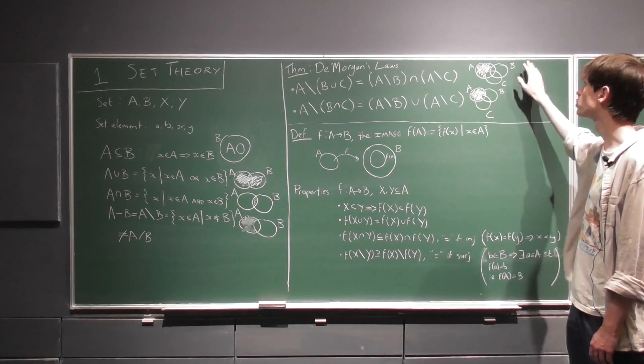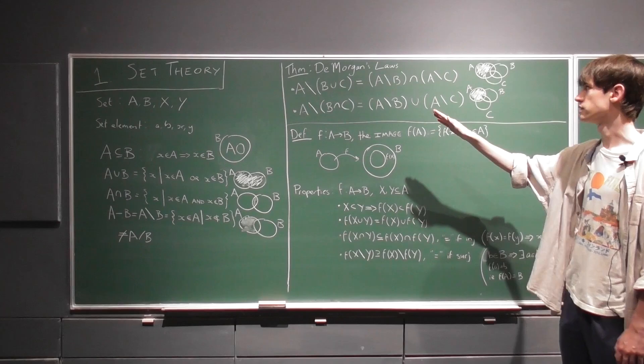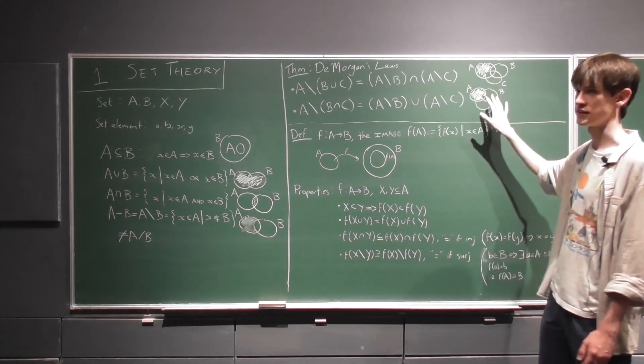You can do it out on pen and paper, this proof, or you can just draw the Venn diagrams, and you'll get a picture like this in order if you draw it using the instructions from the left-hand side of the equation or the right-hand side, and you'll find that they're equal.